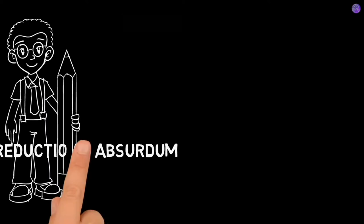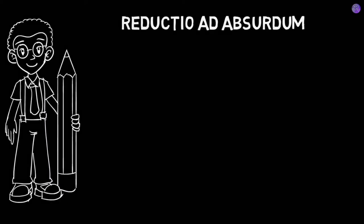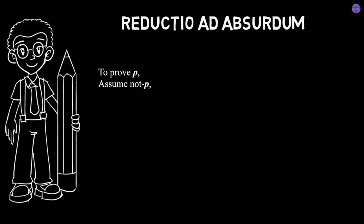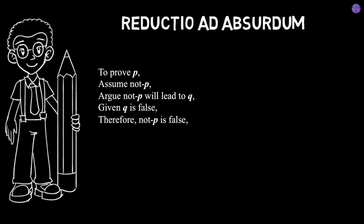Reductio ad absurdum is a form of deductive logic which one can use to disprove an opponent's argument. Its usage is generally represented as follows: to prove p, we assume the opposite of p, and then we argue that the opposite of p would lead to q. And given q is false, impossible, highly unlikely, or morally unacceptable, therefore the opposite of p is false, and therefore p must be true.